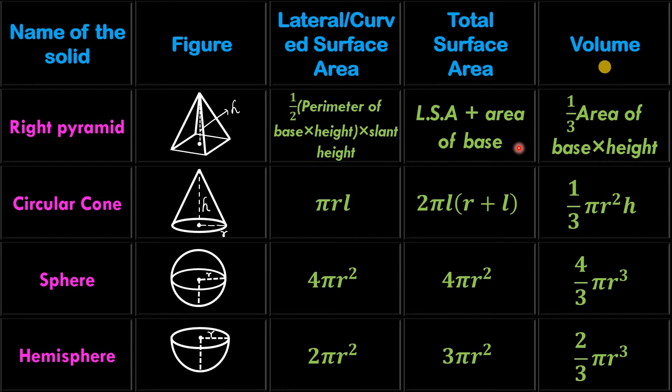Total surface area is lateral surface area plus area of base. Its volume 1 by 3 area of base into height.